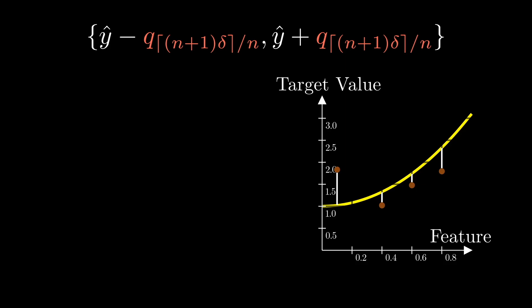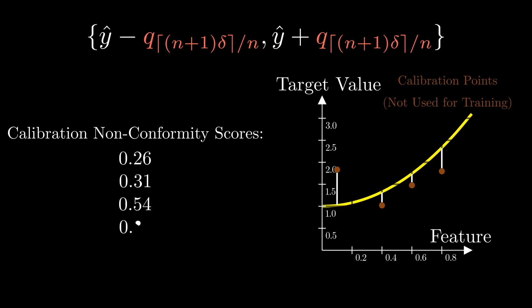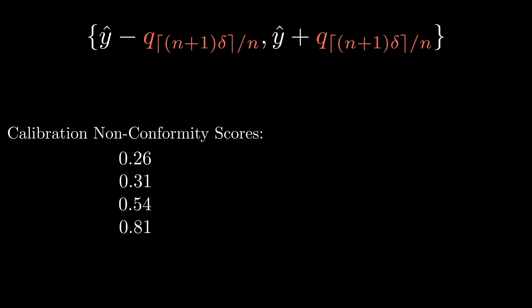The brown dots, let's call them calibration points. Pass each of these points through the non-conformity measuring function s to get the set of non-conformity values. The set will contain the values of 0.26, 0.31, 0.54, 0.81, sorted from low to high. We discussed in the previous episode that because of exchangeability, these non-conformity values are all valid quantiles.